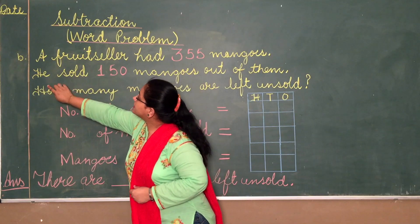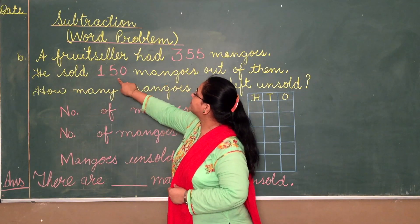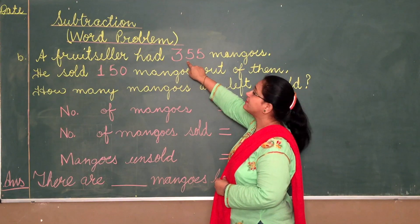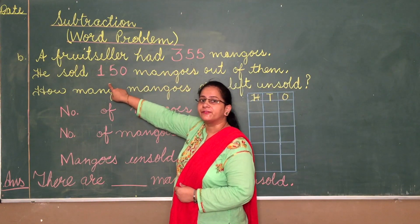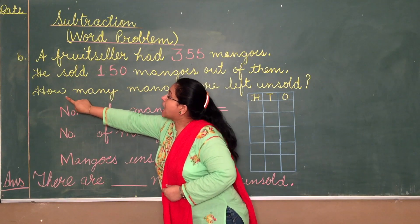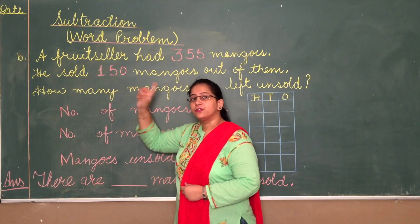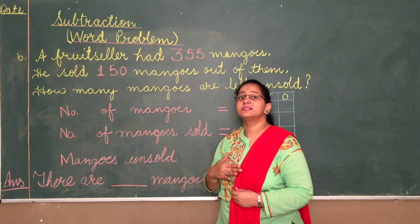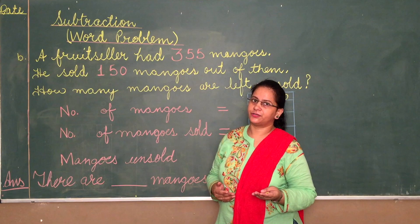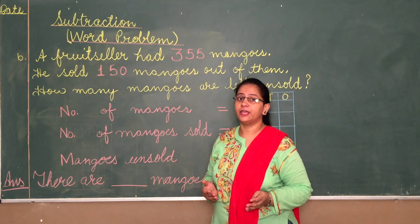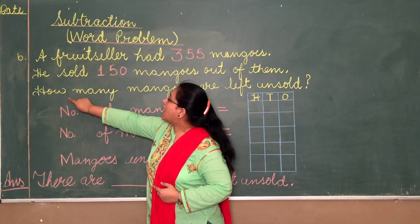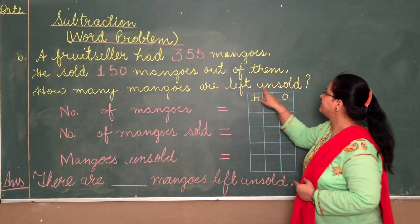He sold 150 mangoes out of them — out of 355 he sold 150. Now the third sentence is: how many mangoes are left unsold? When the words 'how many' appear, click in your mind that this is a subtraction. You have to identify it yourself — nobody is going to tell you in the examination.